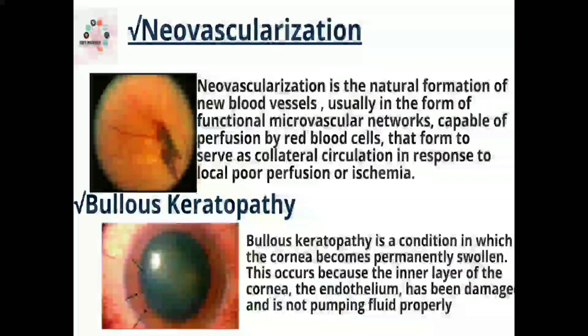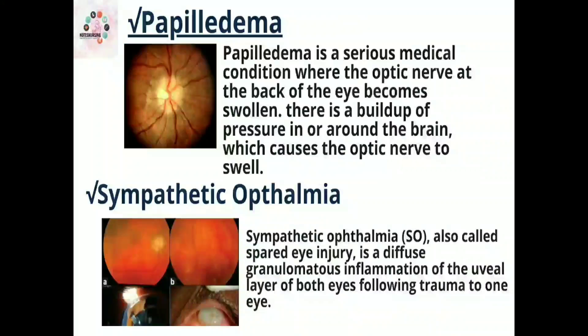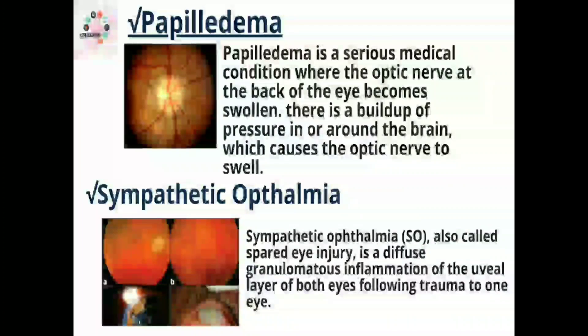Next we have bullous keratopathy — a condition in which the cornea becomes permanently swollen. This occurs because the inner layer of the cornea, the endothelium, has been damaged and is not pumping fluid properly.